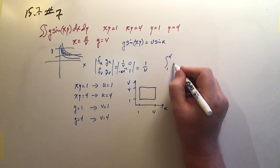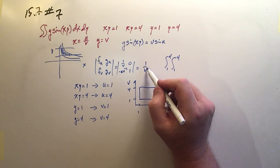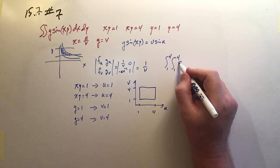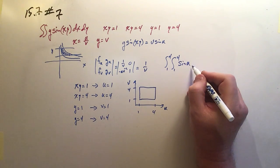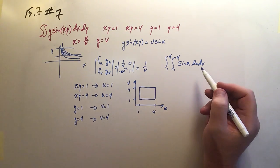So our limits are from 1 to 4 in both u and v. So it's the integral from 1 to 4, integral from 1 to 4. It's this argument times the Jacobian. So it's v sine u times 1 over v, or just sine u. And it's du dv. I don't have to worry about order because they're both the same.